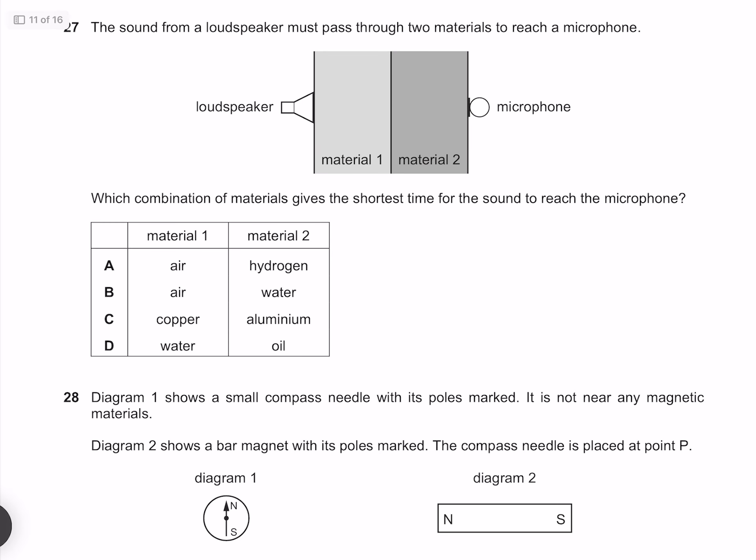The sound from a loudspeaker must pass through two materials to reach a microphone. Which combination of materials gives the shortest time for the sound to reach the microphone? The speed of sound is greater in denser materials, which given that these two are far denser than the other options, means our answer must be C.